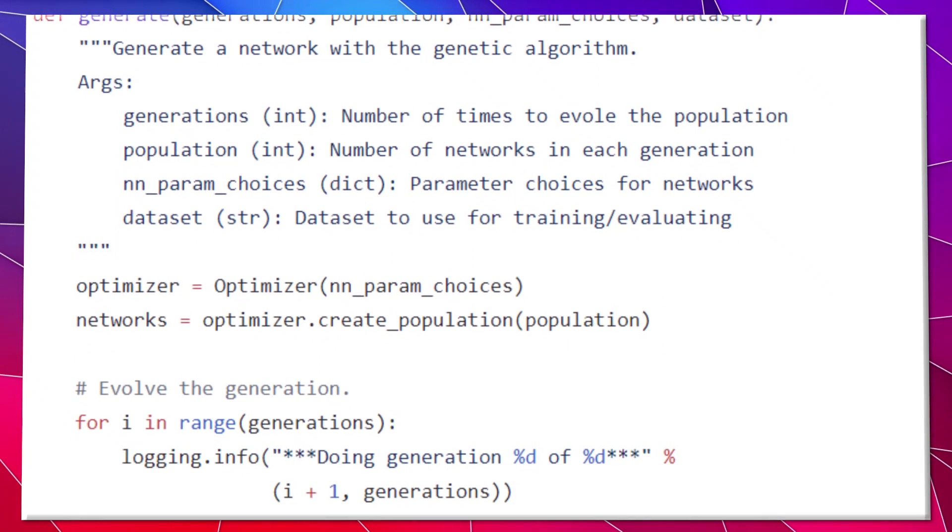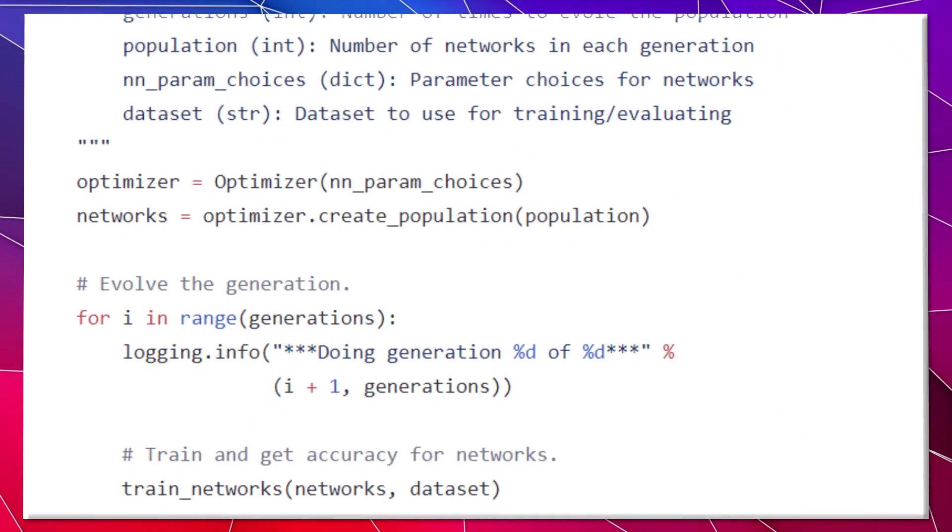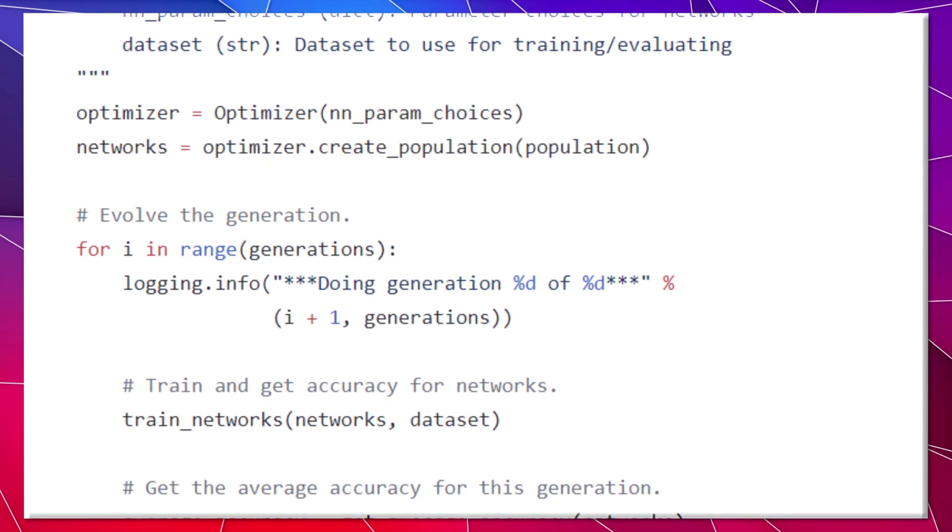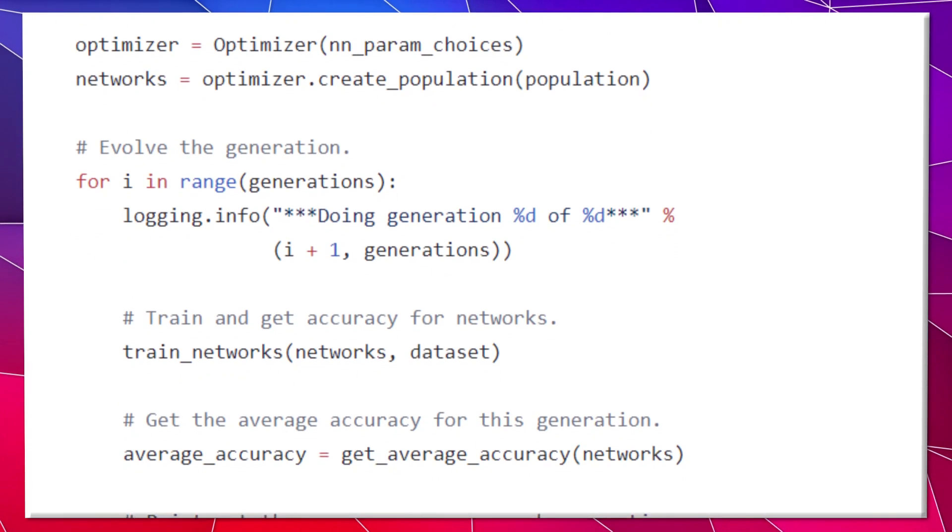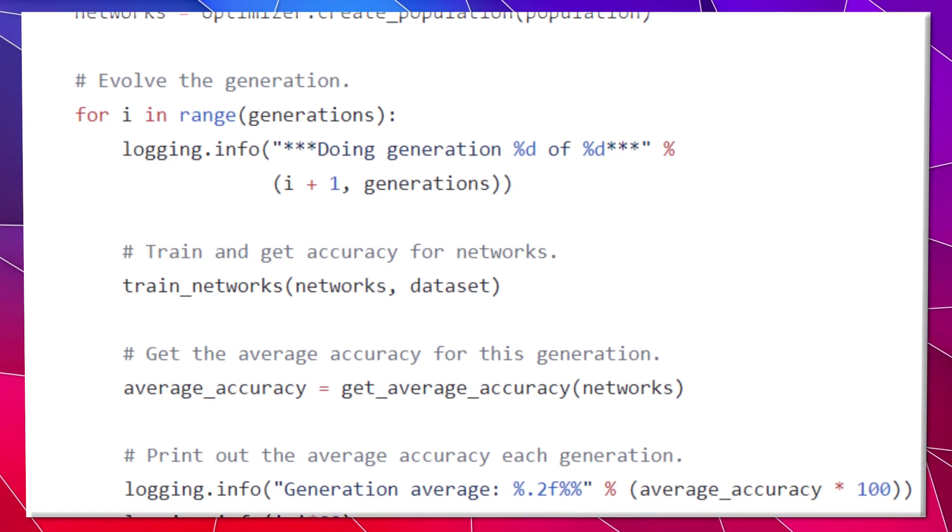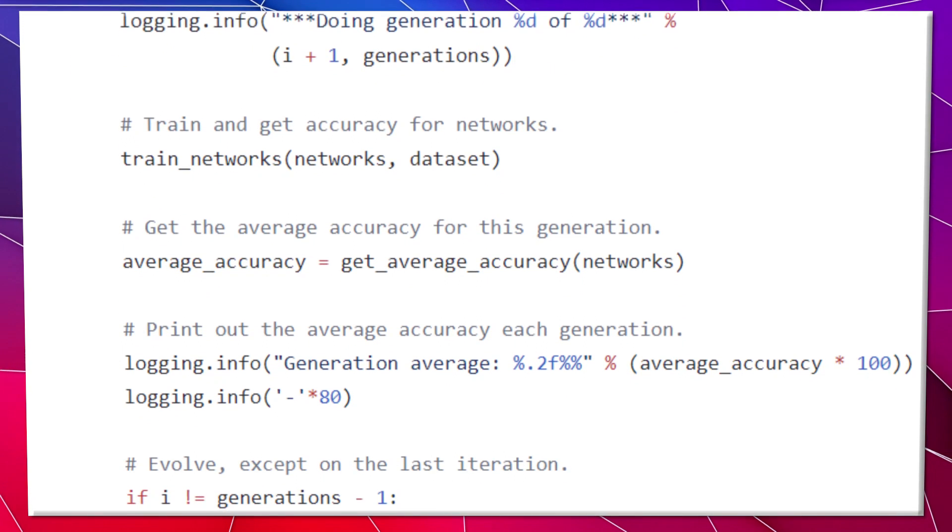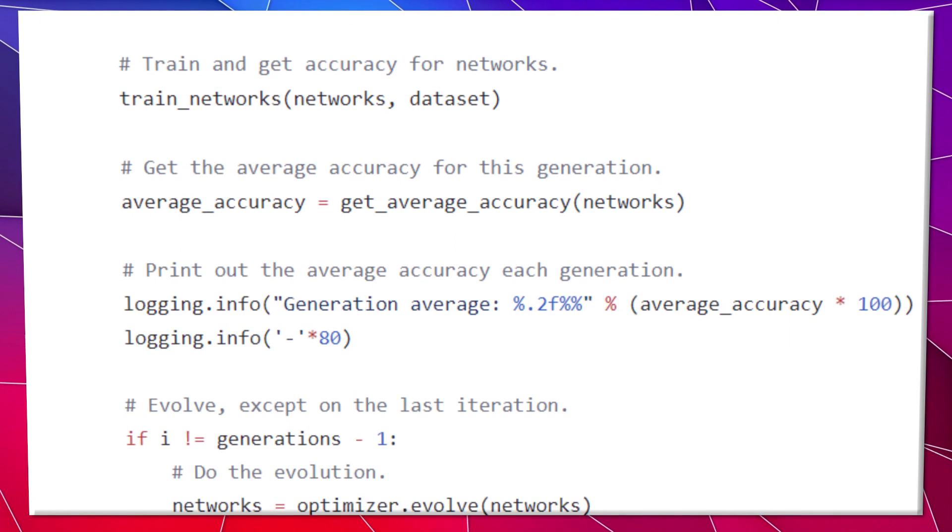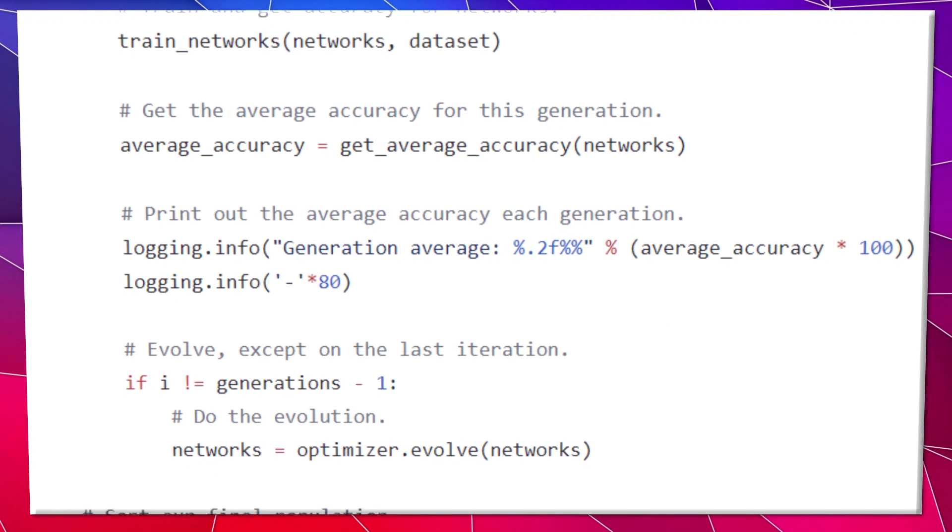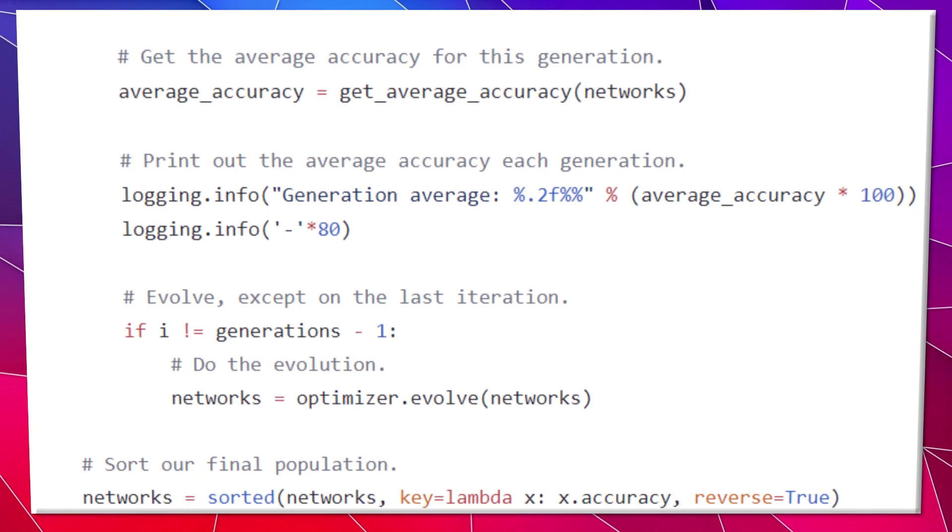We'll also select a few of the lower scoring networks since it could potentially result in us not getting stuck in a local maximum as we optimize. We can also randomly mutate some of our network parameters as well. Both of these methods are like an evolutionary way of preventing overfitting.